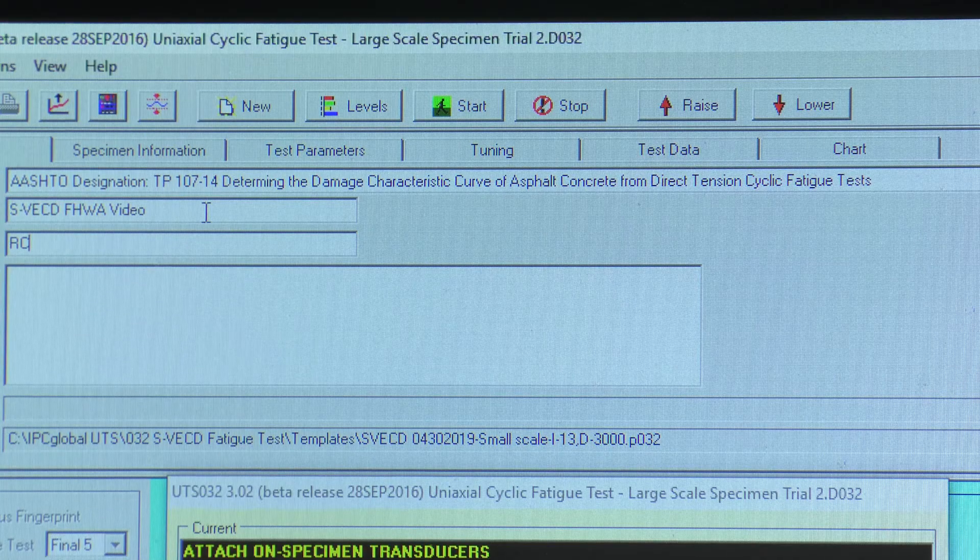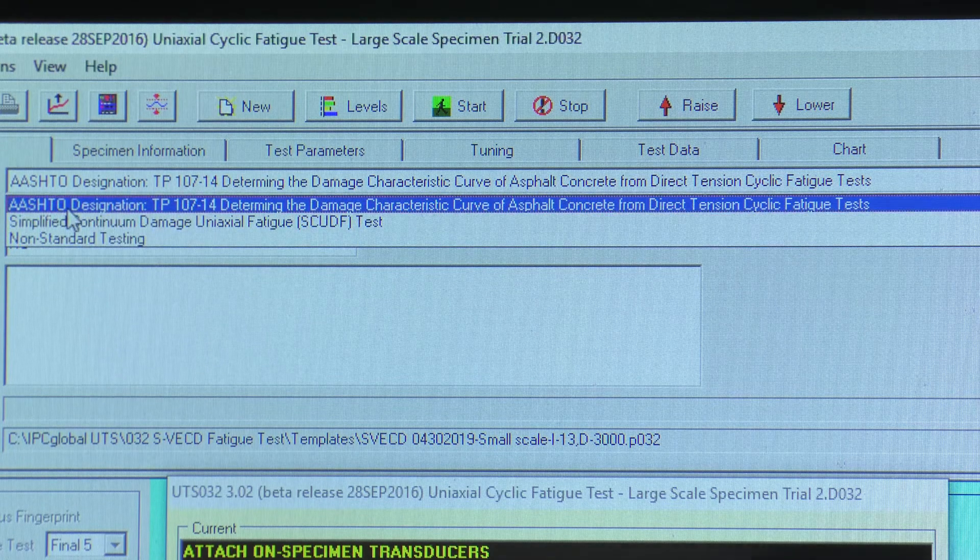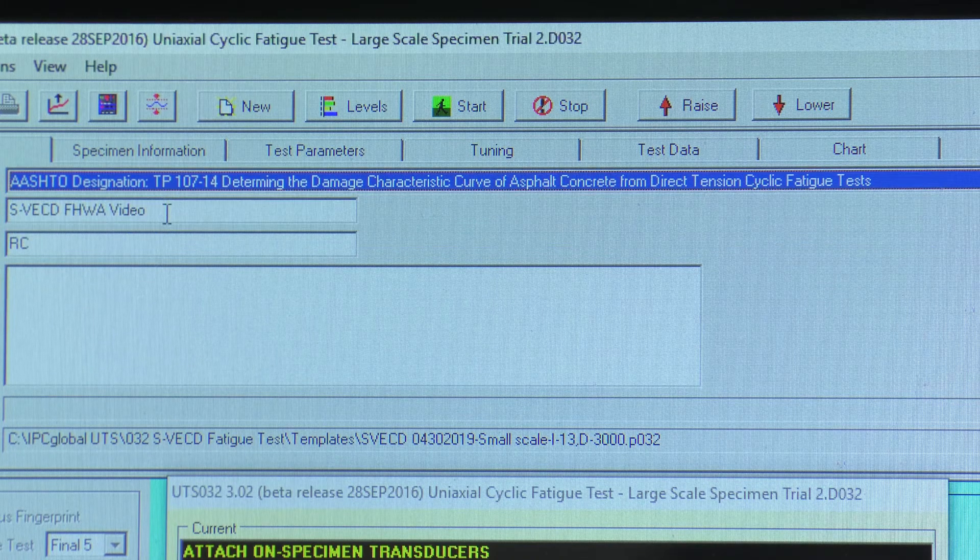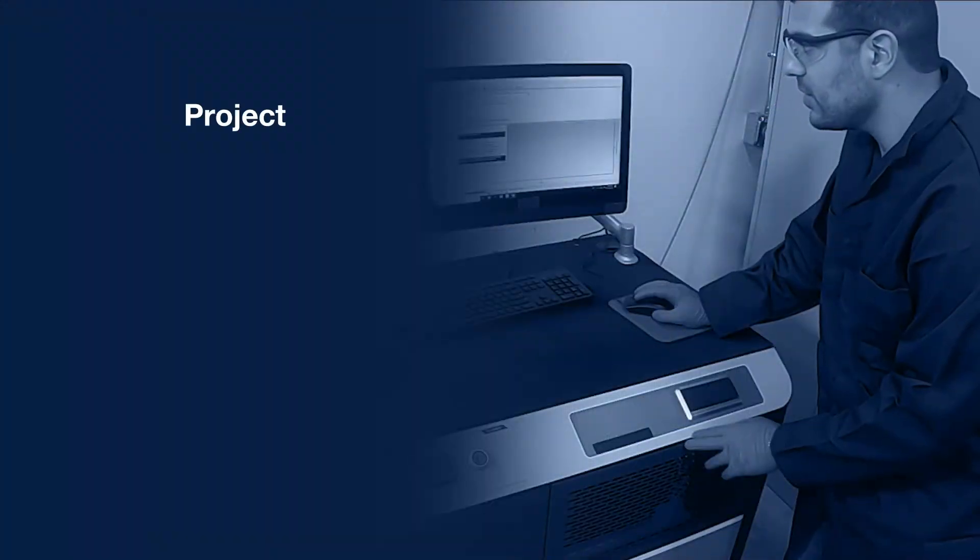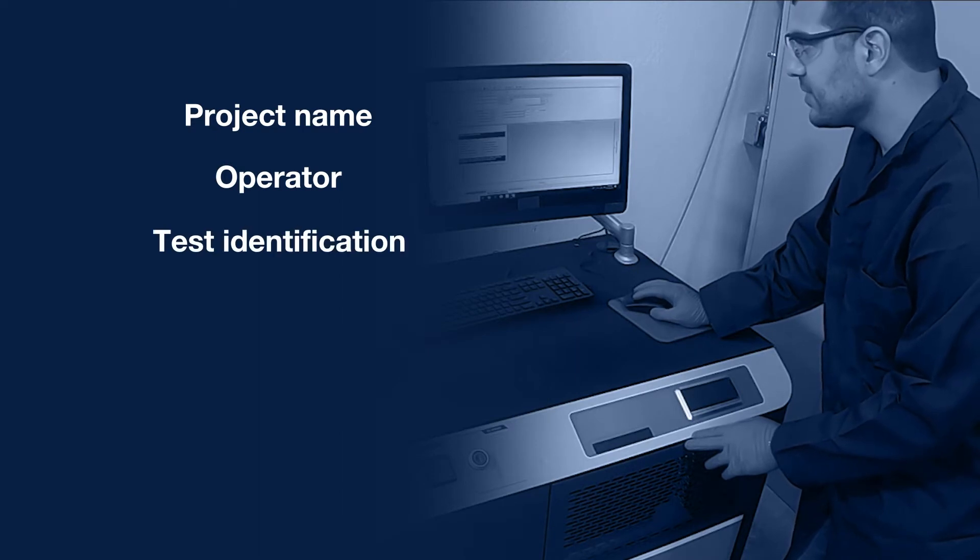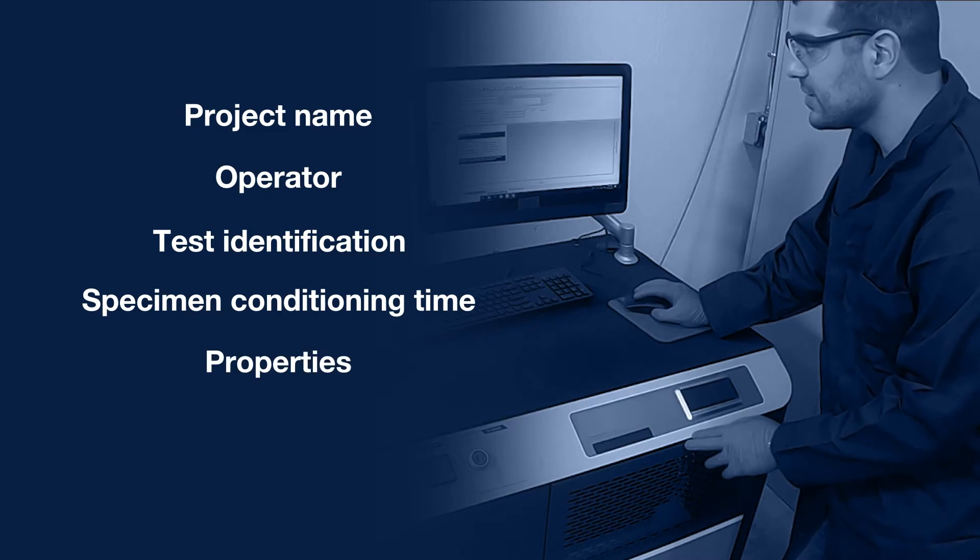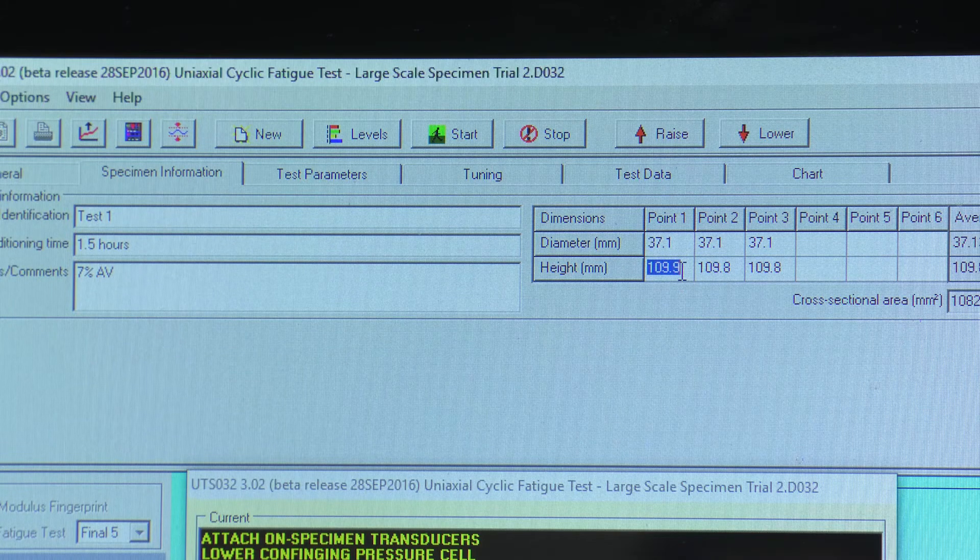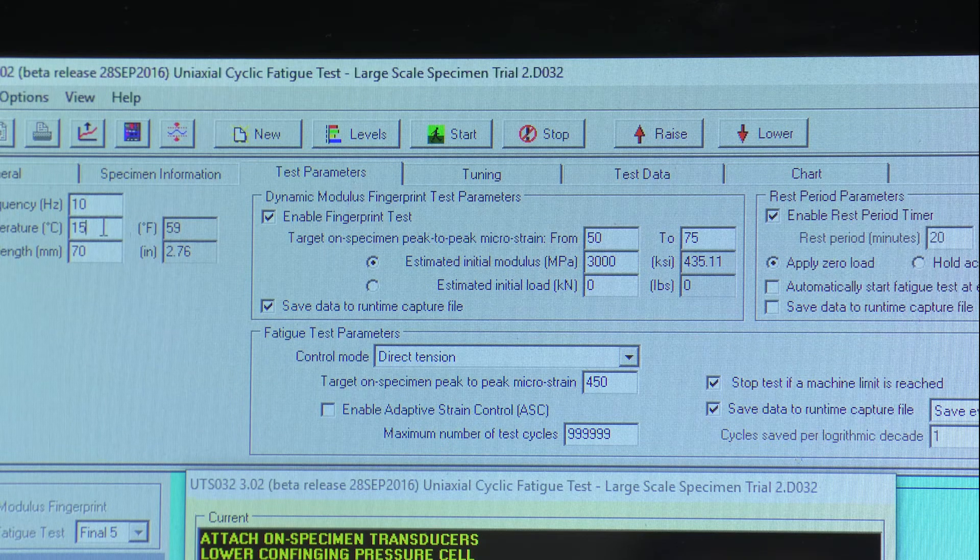To start the cyclic fatigue test, select AASHTO designation TP-107 or TP-133 on the equipment control software. If AASHTO TP-107 is selected, the equipment should be fine-tuned for small-scale testing. Enter the project name, operator, test identification, specimen conditioning time, and properties such as air voids. Input the diameter and height. Make sure test frequency is set to 10 Hz and the testing temperature and axial gauge length are correct.